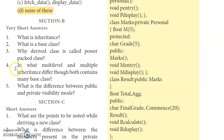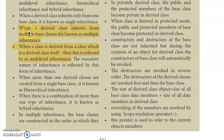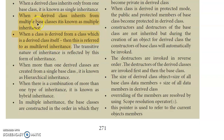Fourth question: How do multi-level and multiple inheritance differ? In multiple inheritance, one derived class inherits from multiple base classes. In multi-level inheritance, a derived class is again derived — forming a chain. This is the key difference between the two types.